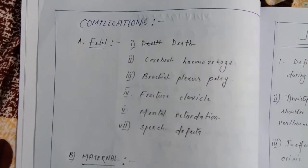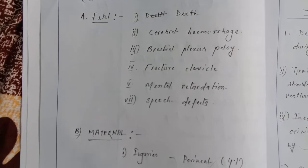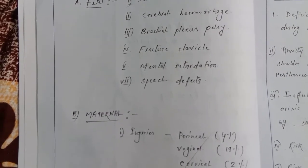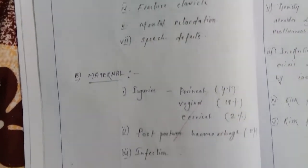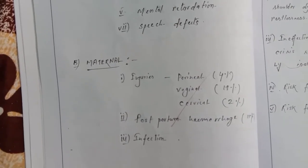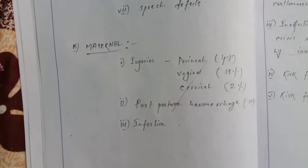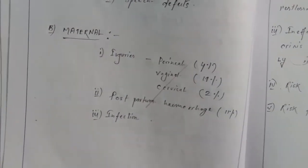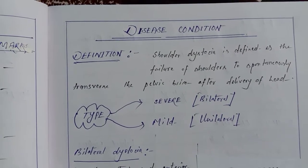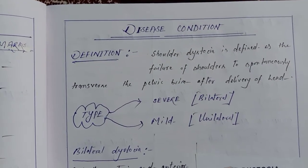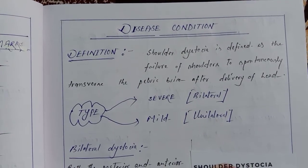Complications — fetal: death, cerebral hemorrhage, brachial plexus palsy, fracture clavicle, mental retardation, speech defects. Maternal injuries may be perineal, vaginal, or cervical; also postpartum hemorrhage and infection. Reference: DC Dutta's Textbook of Obstetrics, 7th edition, page 406.